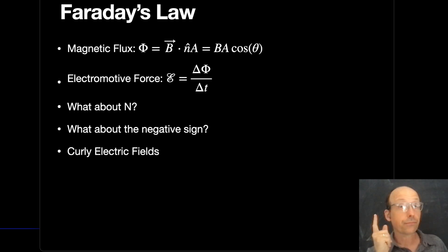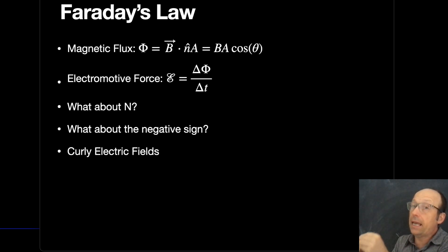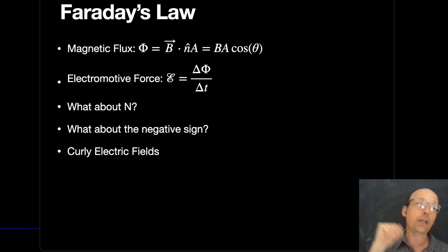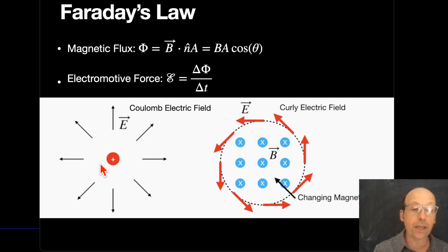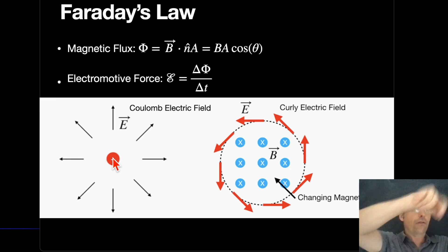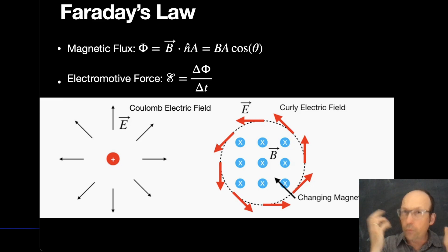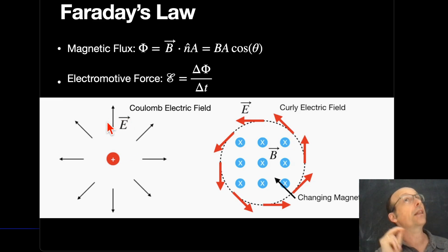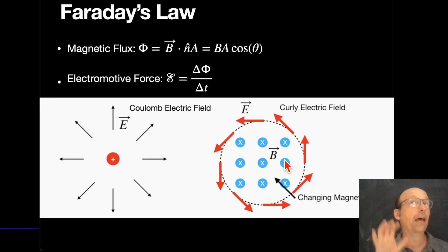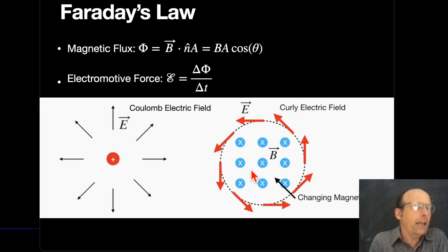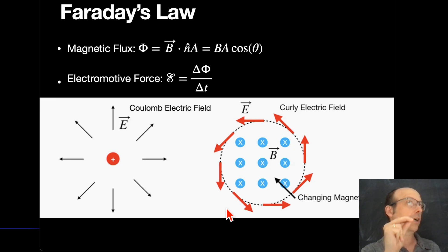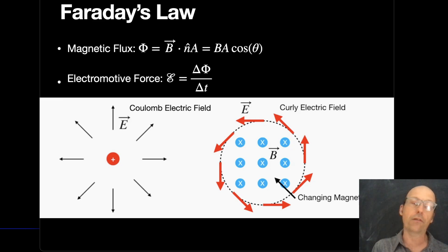What Faraday's Law really says is that a changing magnetic flux creates an electric field — I like to call these curly electric fields. A Coulomb electric field points away from a positive charge, and the voltage around a closed loop is zero. But a curly electric field, produced by a changing magnetic field, forms a loop shape. Going around that loop, you always travel in the direction of the field, so you do get a voltage — an EMF.